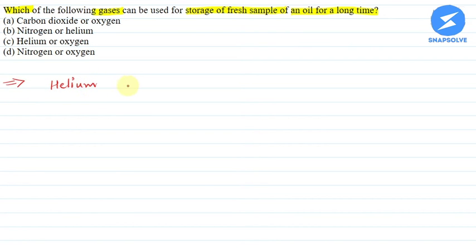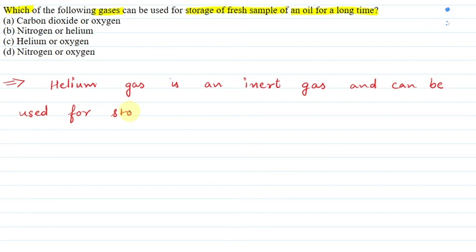Helium gas is an inert gas and can be used for storage of fresh sample of oil for a long time.